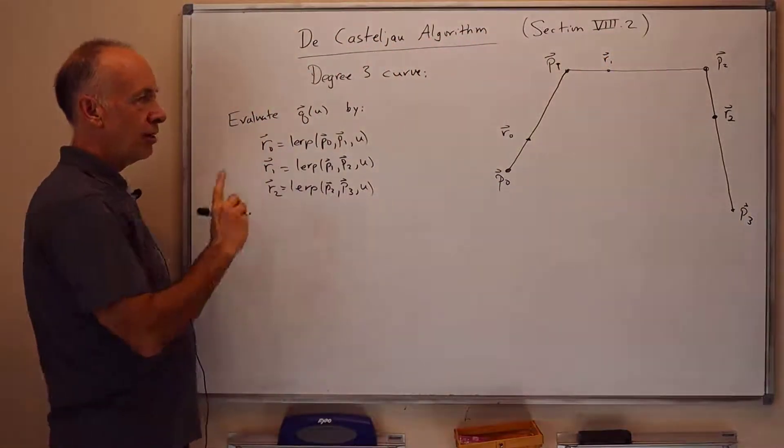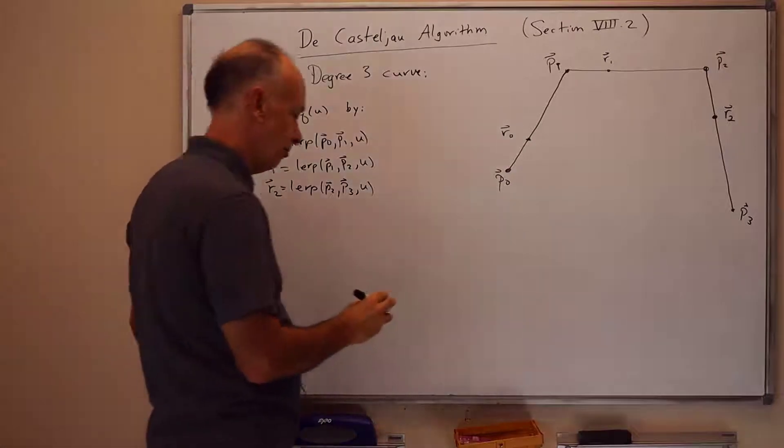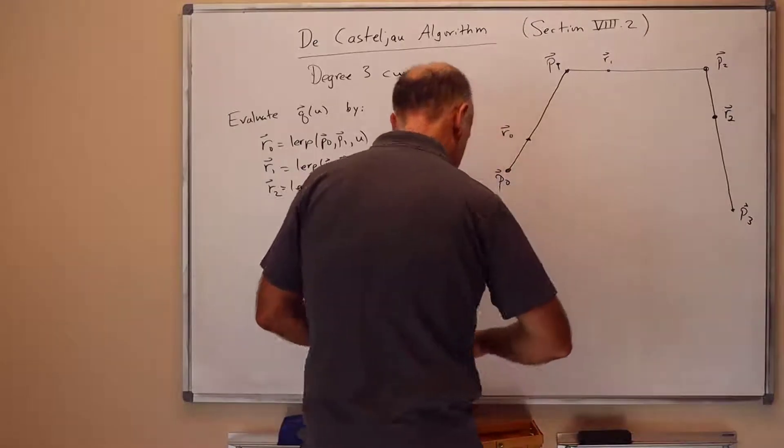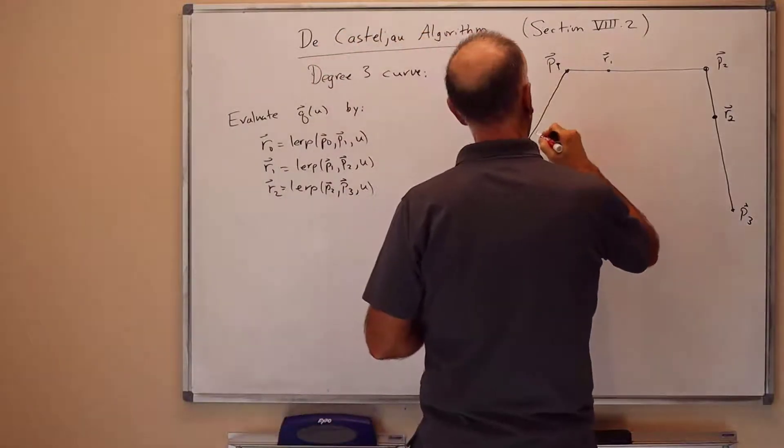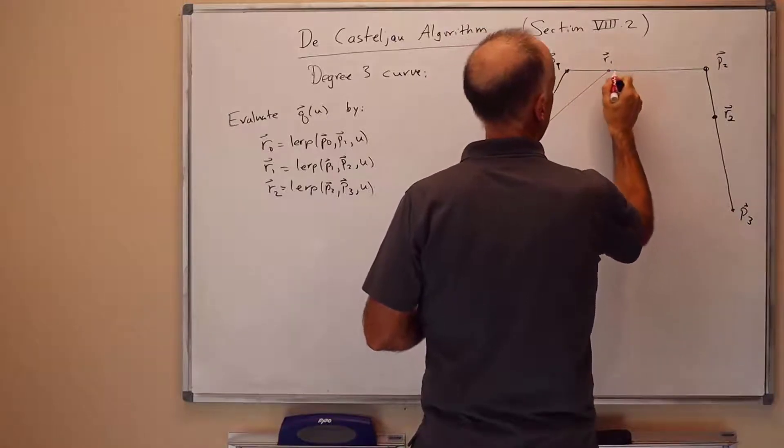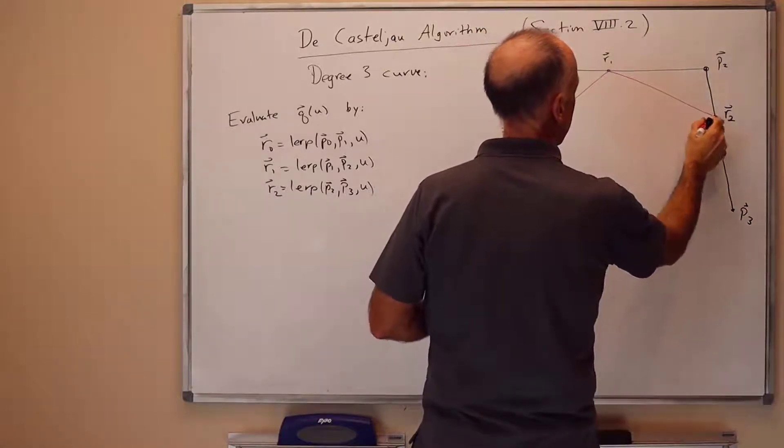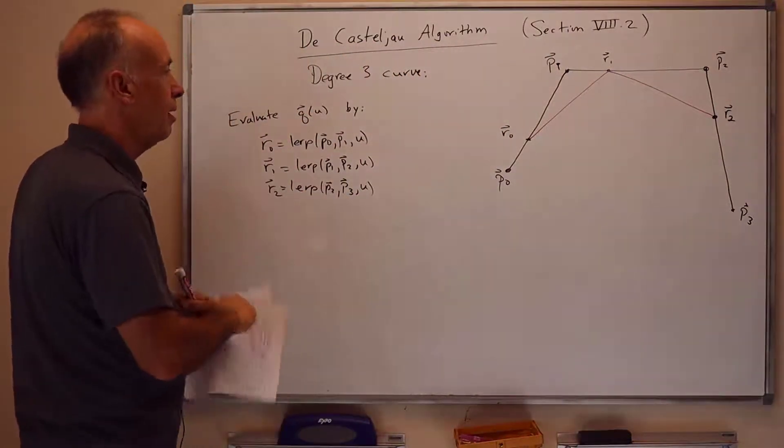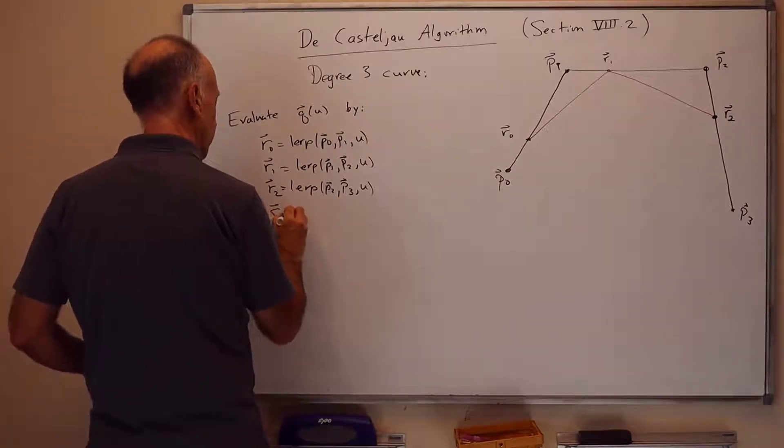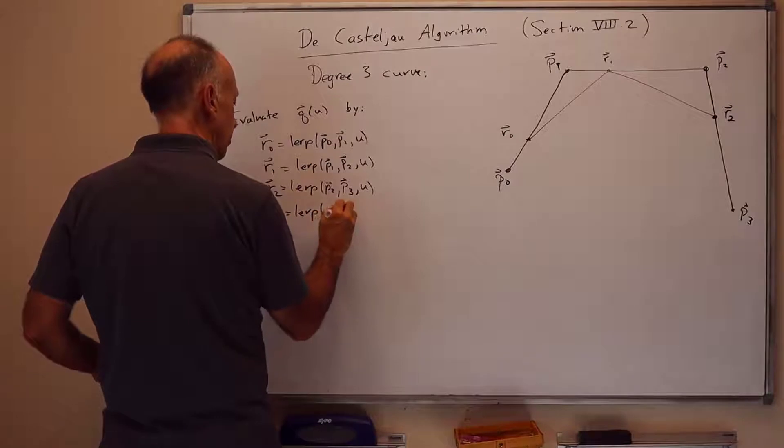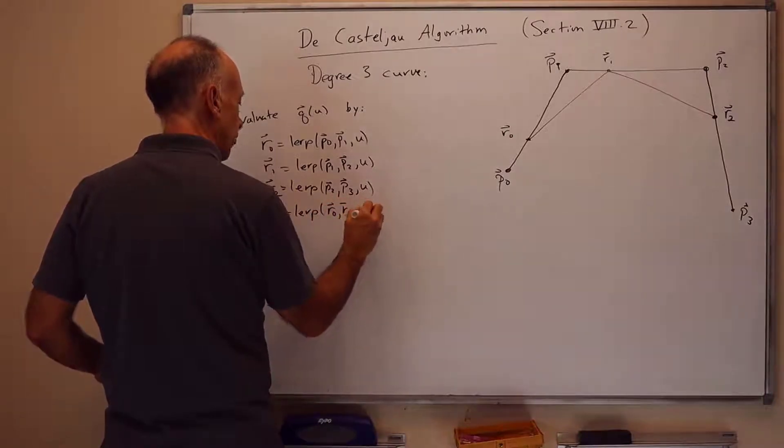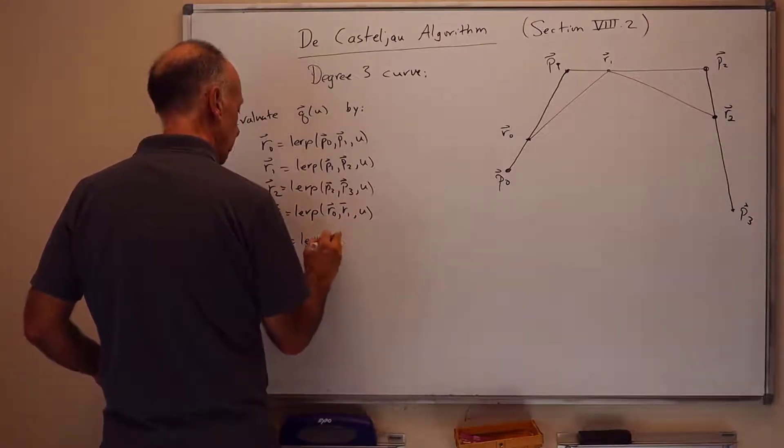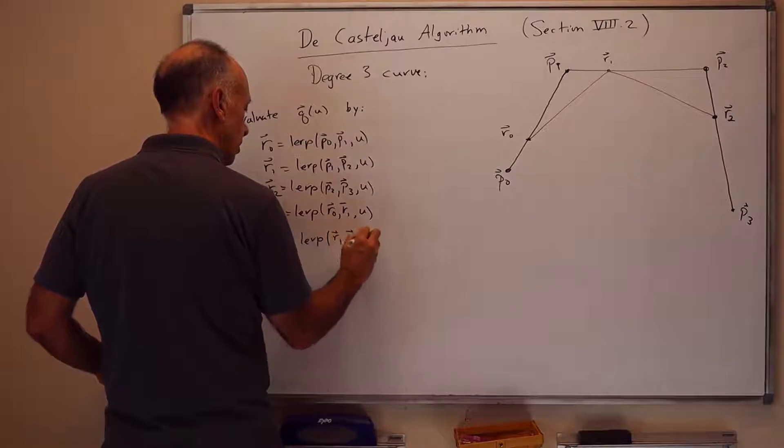So that's the first stage. And now we're going to join these by straight line segments and re-lerp again. So here's the straight line segment from R0 to R1, and from R1 to R2. So now we're going to form S0 by lerping from R0 to R1 by fraction U, and S1 by lerping from R1 to R2 by fraction U.